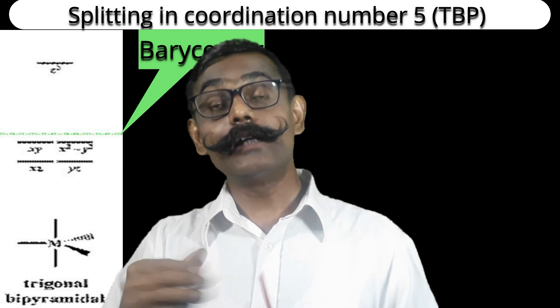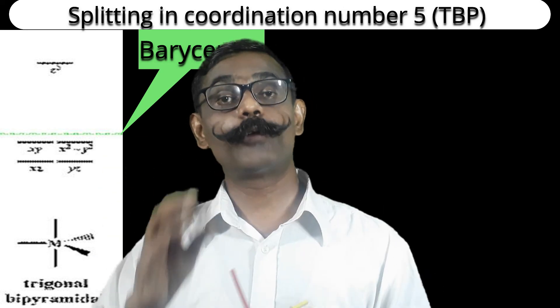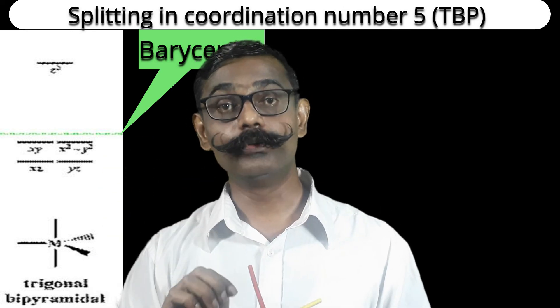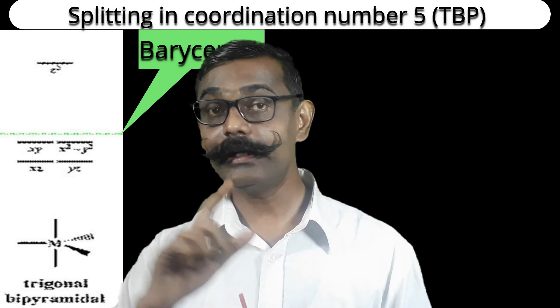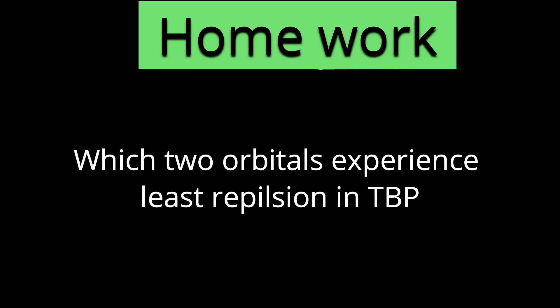The energy sequence for trigonal bipyramidal coordination number five is now clear. Let us see the other arrangement for coordination number five — square pyramidal — in the next part. As a homework question: out of the five d-orbitals, which two experience the least repulsion in the trigonal bipyramidal arrangement?